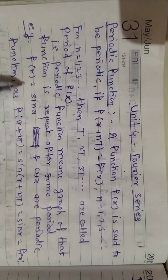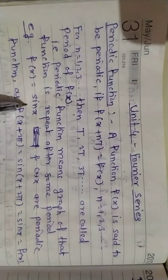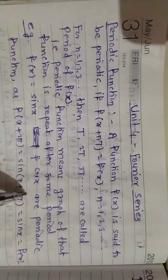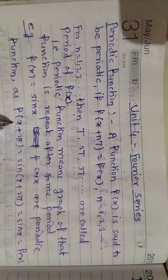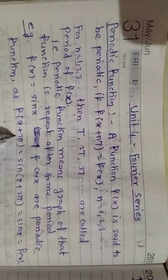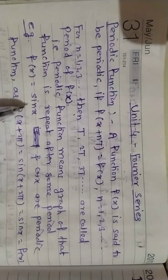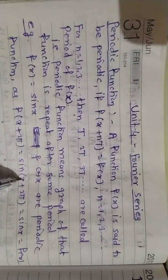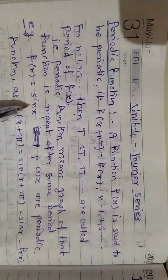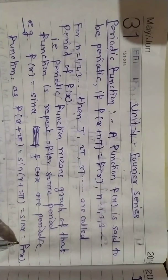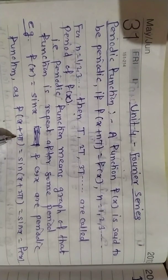For example, f(x) = sin(x) and cos(x) are periodic functions with period 2π. If you find f(x + 2π) = sin(x + 2π) = sin(x), we get back the original function. From this we can say that sin(x) is a periodic function with period 2π.